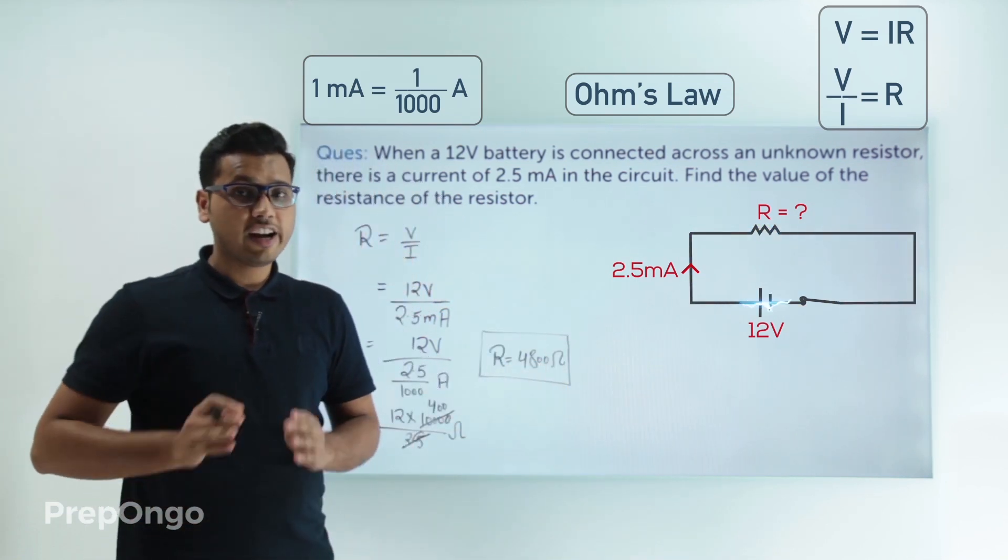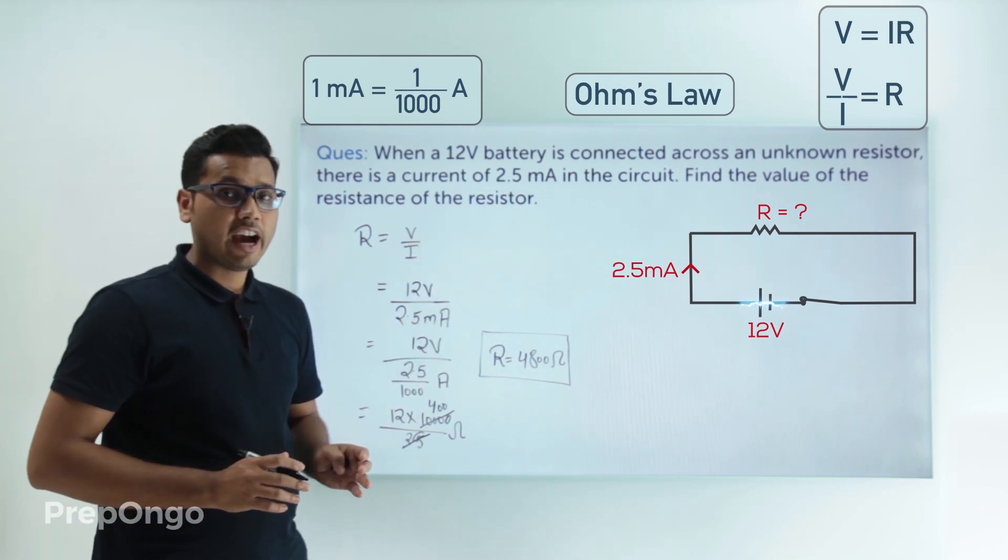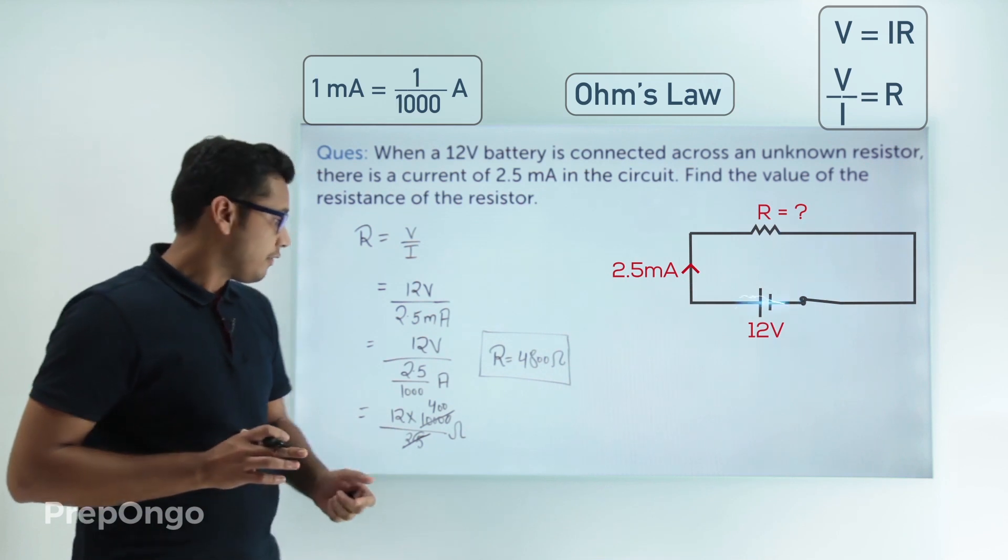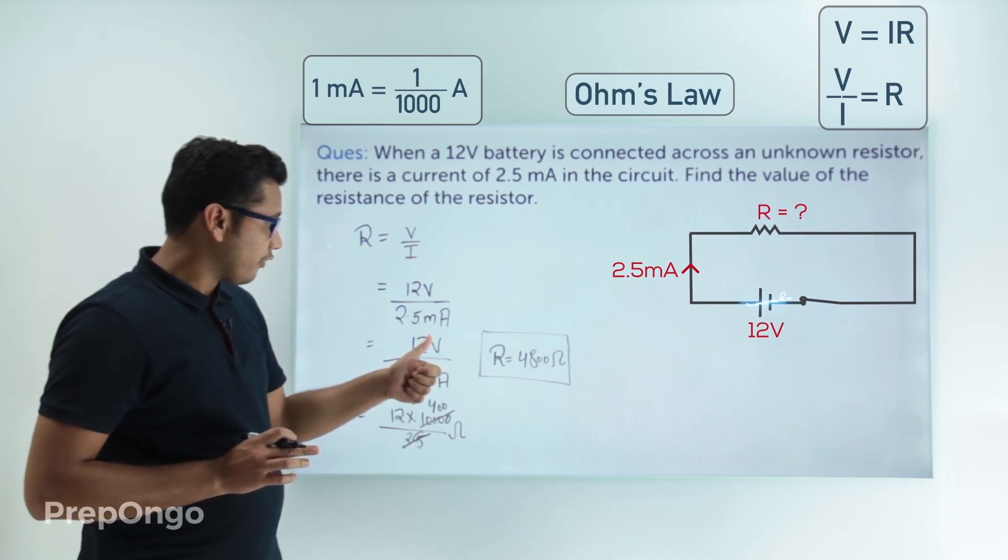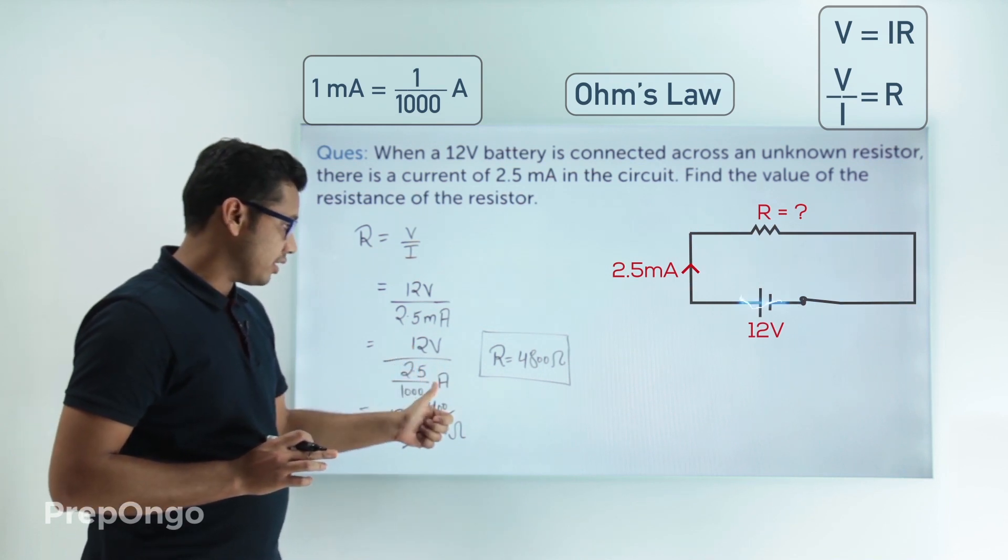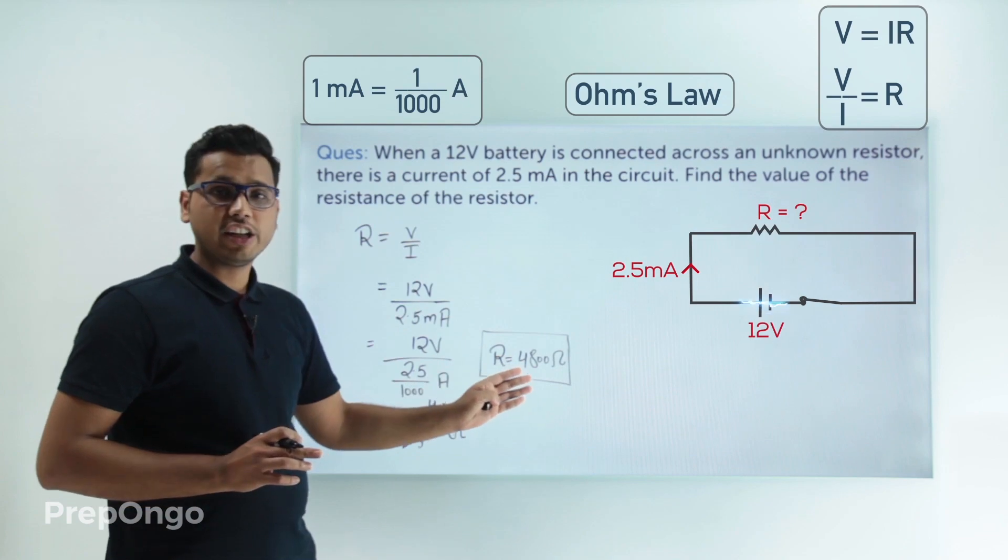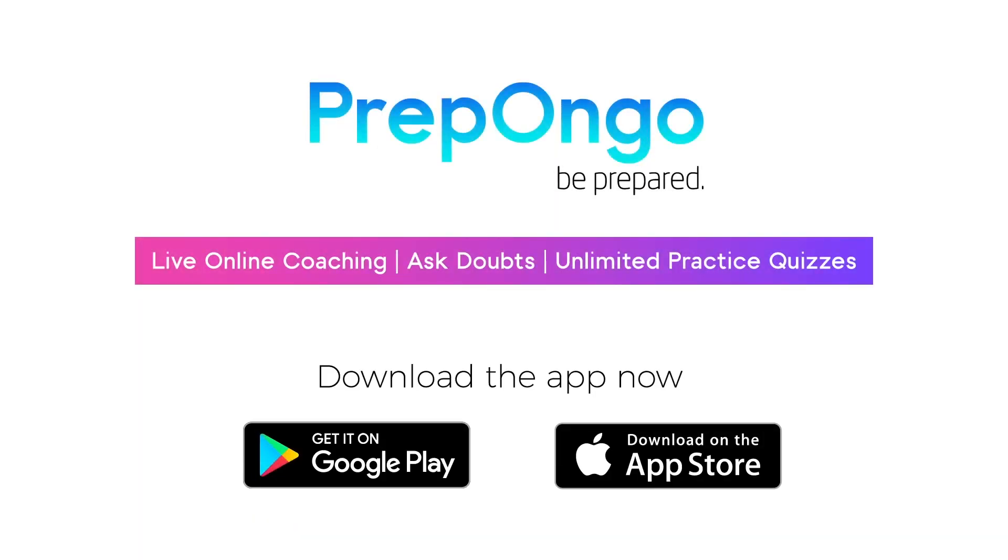All we had done is we applied the law and then we remembered that we have to put the values of voltage in volts and of current in amperes. Then we simply calculated and got the answer as 4800 ohms. This will be done. Thank you.